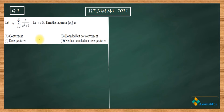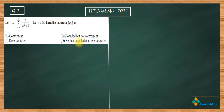Let a_n be defined like this — a_n is a sequence defined for n belonging to the naturals. The first option suggests it's convergent, the second that it's bounded but not convergent, the third that it diverges to infinity, and the fourth that it's neither bounded nor diverges to infinity. So these are your options.